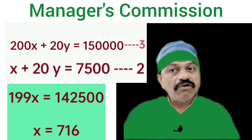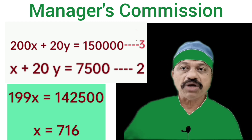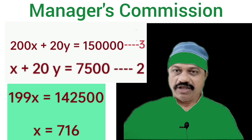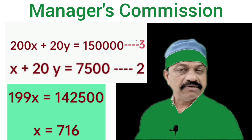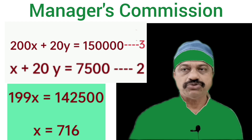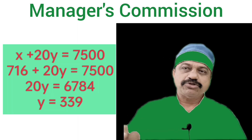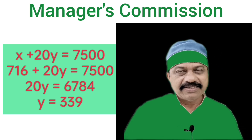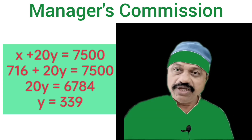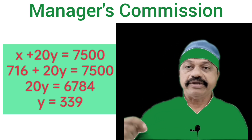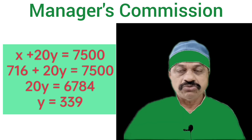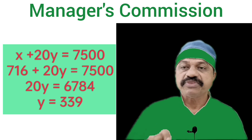Value of x, that is, commission of General Manager after deducting commission of Works Manager, is 716. Then, in order to calculate the commission of Works Manager after deducting commission of General Manager, we substitute the value of x = 716 into equation 2. Equation 2 is: x plus 20y = 7,500. That is, 716 plus 20y = 7,500. Therefore, 20y = 7,500 minus 716 = 6,784. Therefore, y = 6,784 divided by 20, which gives the answer 339.